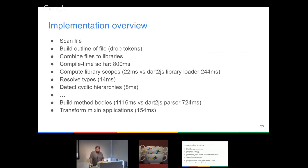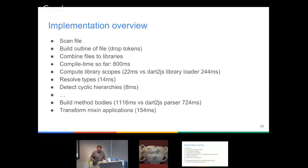Kernel is pretty well below that 800 millisecond threshold. There are a bunch of other phases. I want to mention computing library scopes — when I implemented that, I was in for a big surprise: I did not expect it to be 10 times faster than the implementation in Dart2JS, but it was. I also detect cyclic hierarchies in 8 milliseconds, which seems to be costly normally, but doing it with the entire graph and one computation just seems to be faster. I think it has to do with locality as well — the code gets exercised enough that the VM optimizes it.